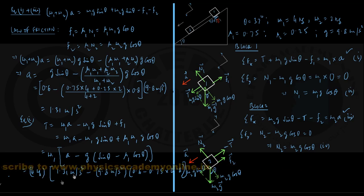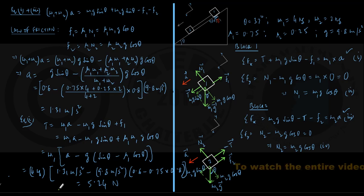.31 m per second square and that value is coming out to be 5.24 N in three significant figures. So we have got answers of both the parts,